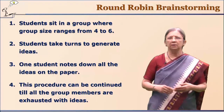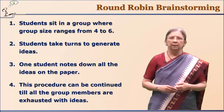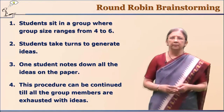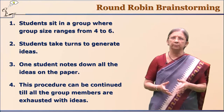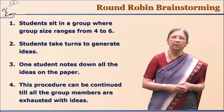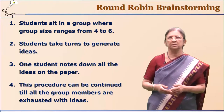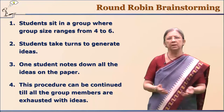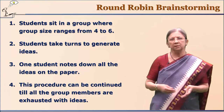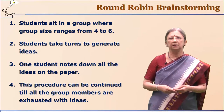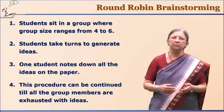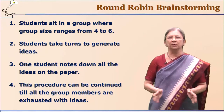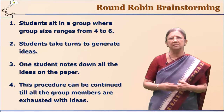The second technique is called round robin brainstorming. Students sit in a group of 4 to 6 members, which is considered the ideal number. In this small group, students generate ideas, with one student noting down all ideas given by all group members. This continues until students get exhausted with ideas, though you can set a time limit of 20 or 30 minutes.